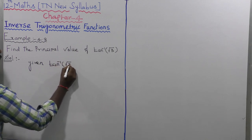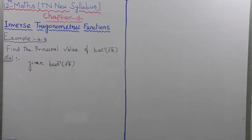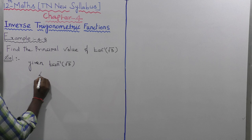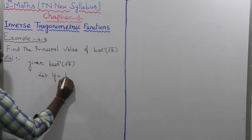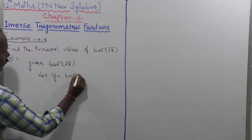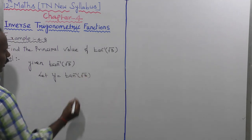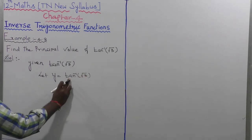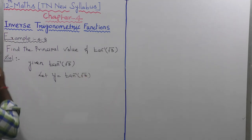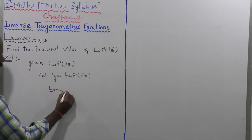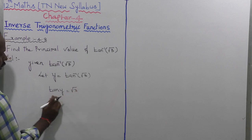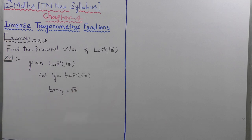Let us consider the value y equal to tan inverse of root 3. Moving tan to the left side, we get tan y equal to root 3.